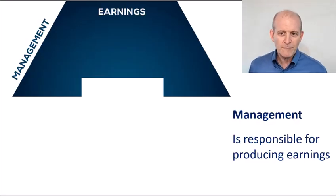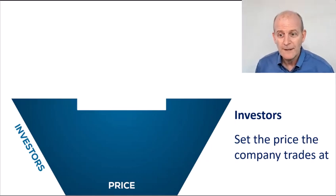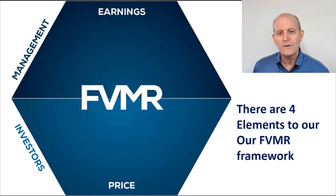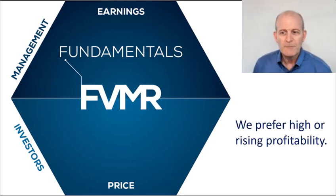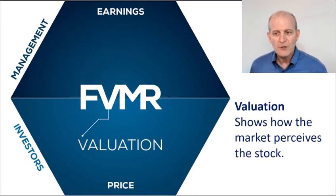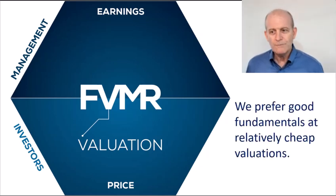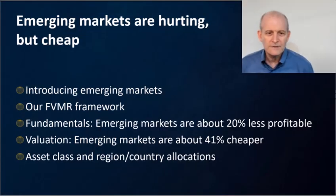My FVMR framework starts with management. Management is responsible for producing earnings. The next part is price, which is the responsibility of investors — they're setting the price based upon their trades. There are four elements: first, fundamentals, looking for solid, strong profitability, which shows that a company is managed well, and we prefer high or rising profitability. Second is V, valuation, which shows how the market perceives the stock, and we prefer good fundamentals at relatively cheap prices. Then there's momentum in both earnings and price, and risk in both earnings and price.